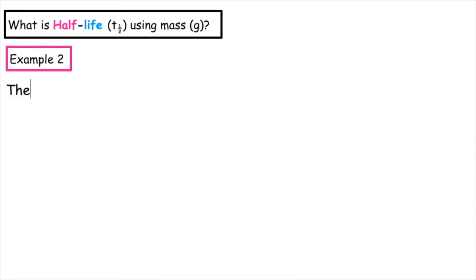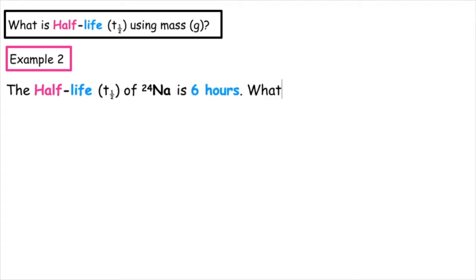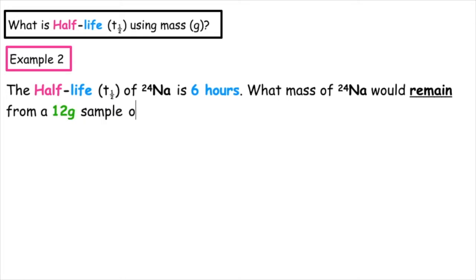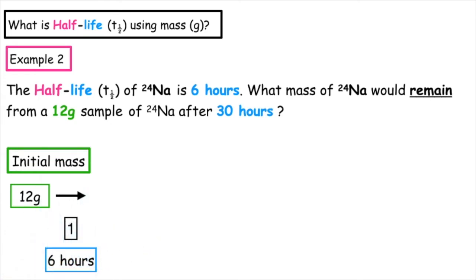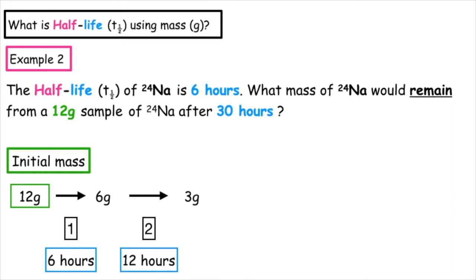Example two: the half-life of sodium-24 is 6 hours. What mass of sodium would remain from a 12 gram sample after 30 hours? We are working in mass, so we start with our initial mass of 12 grams. After one half-life — a total of 6 hours — it produces 6 grams. After a second half-life — a total of 12 hours — it produces 3 grams.